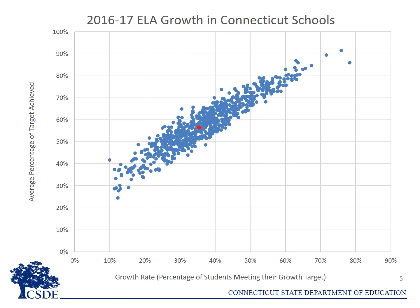Here's a visual illustration of the relationship between the two metrics. In this chart, each blue dot represents a Connecticut school, plotted based on its growth rate on the x-axis and its average percentage of target achieved in ELA for all students during 2016-17 on the y-axis. The red dot represents the state overall. The illustration shows that the two metrics are closely related and that, in general, schools with higher growth rates have a higher average percentage of target achieved.